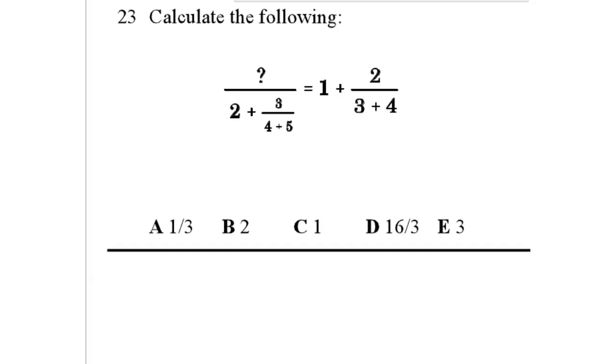VCA test 2, question number 23. Calculate the following: something over 2 plus 3 over 4 plus 5 equals 1 plus 2 over 3 plus 4.